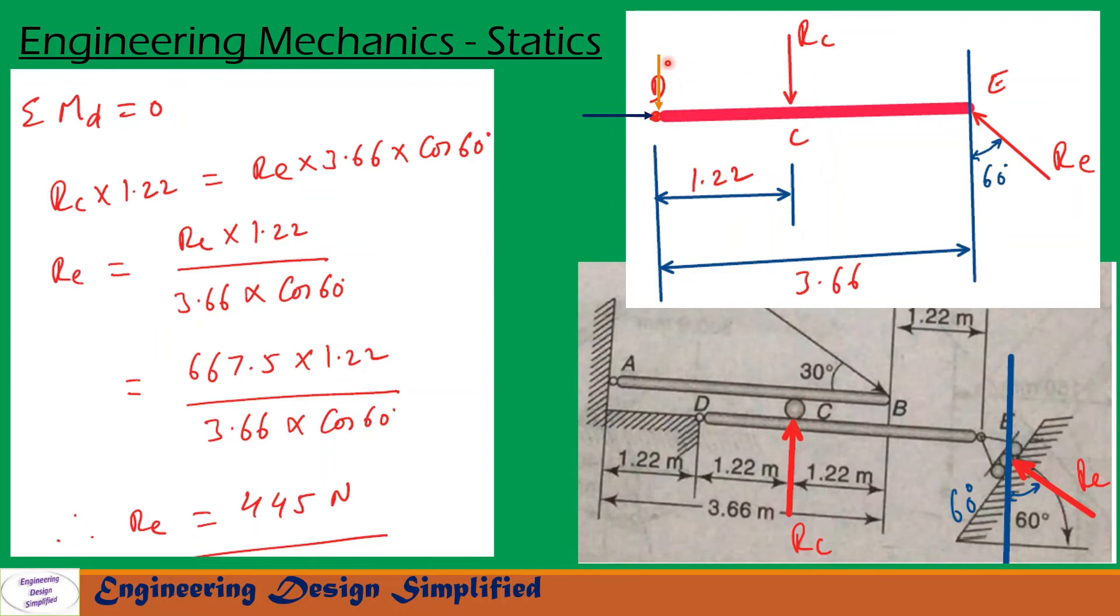At hinge end D, there is a vertical reaction acting vertically downwards and horizontal reaction acting towards this direction. At this end E, there will be a reaction RE acting towards this direction, that is perpendicular to this plane. Since this angle is 60 degrees, then this angle will also be 60 degrees with the vertical. So the distance from D to E is 3.66, that is given here. So there is reaction RE acting at an angle 60 degrees with the vertical and distance is 3.66 meters. And a reaction RC is acting vertically downwards at C and distance is 1.22 meters.